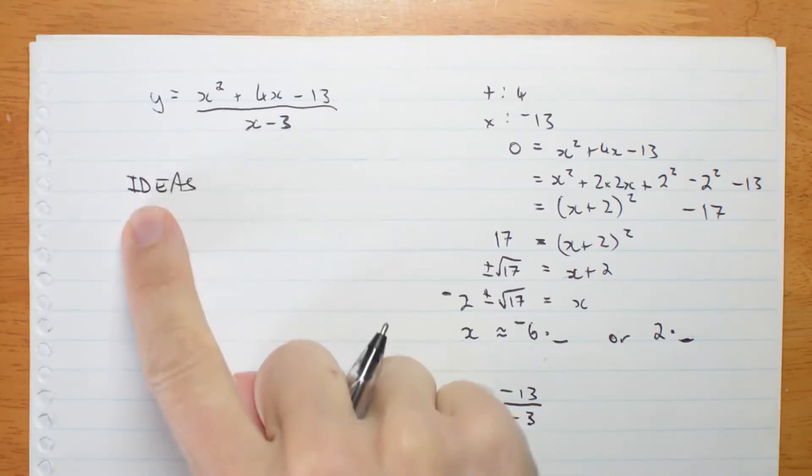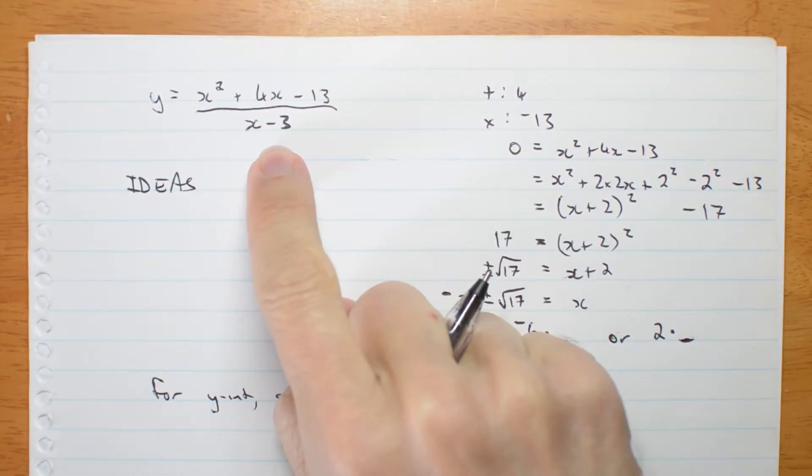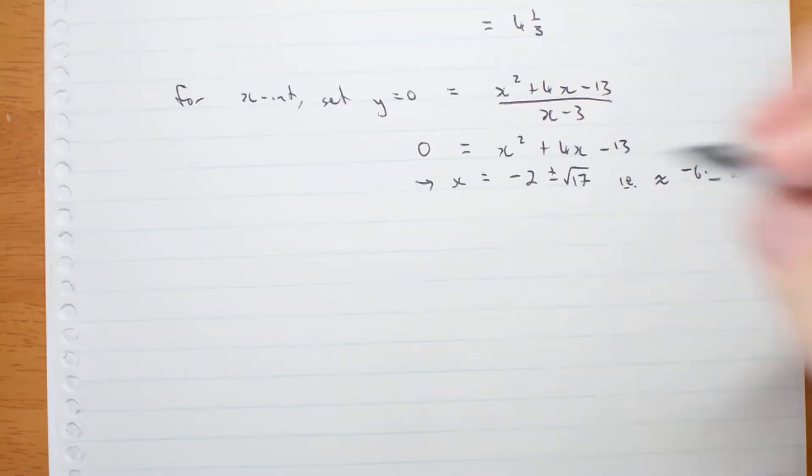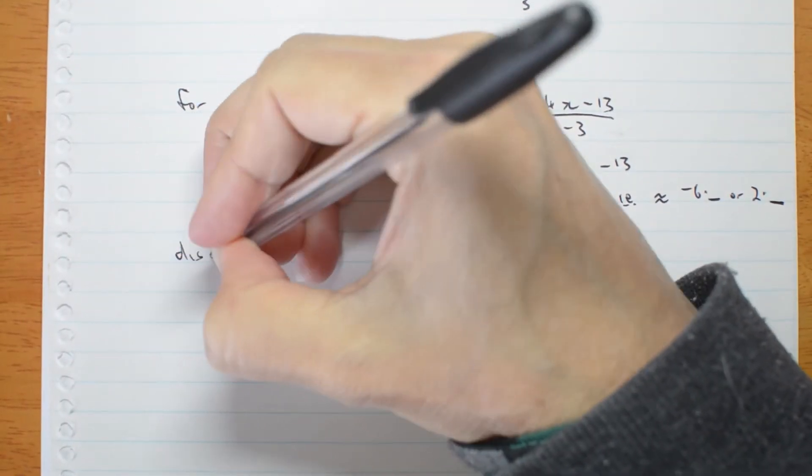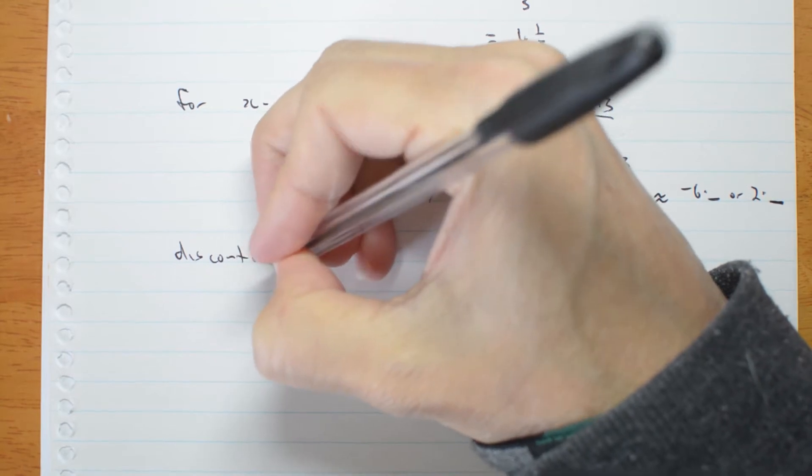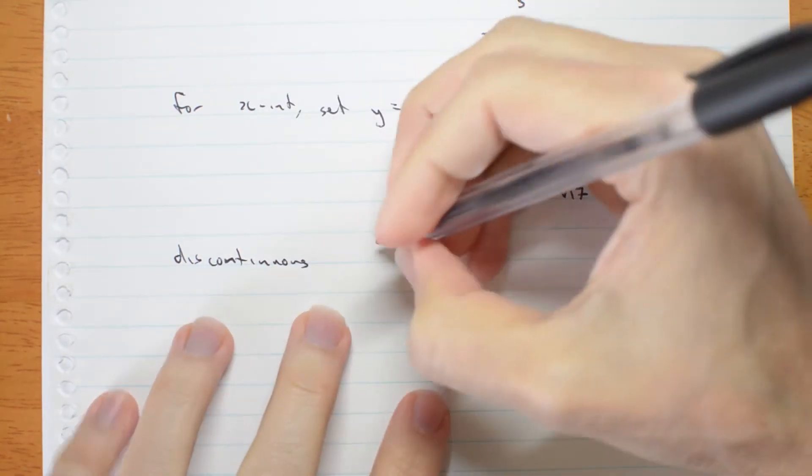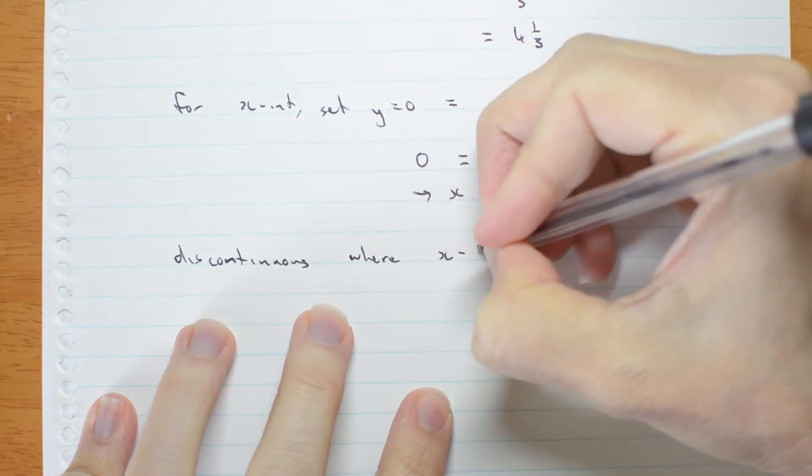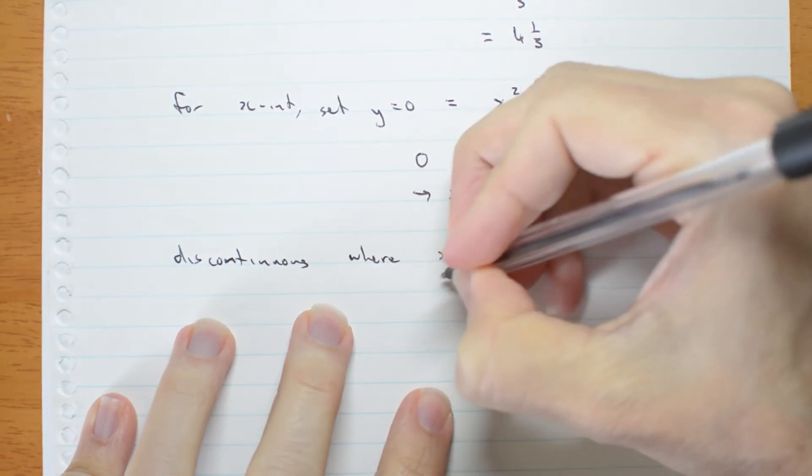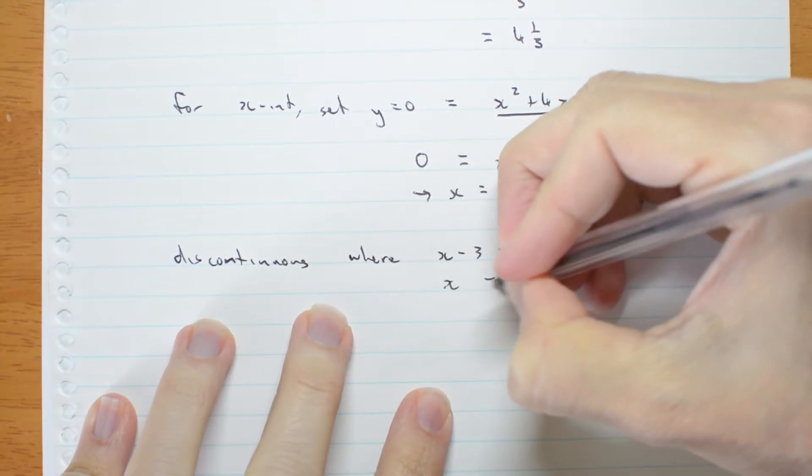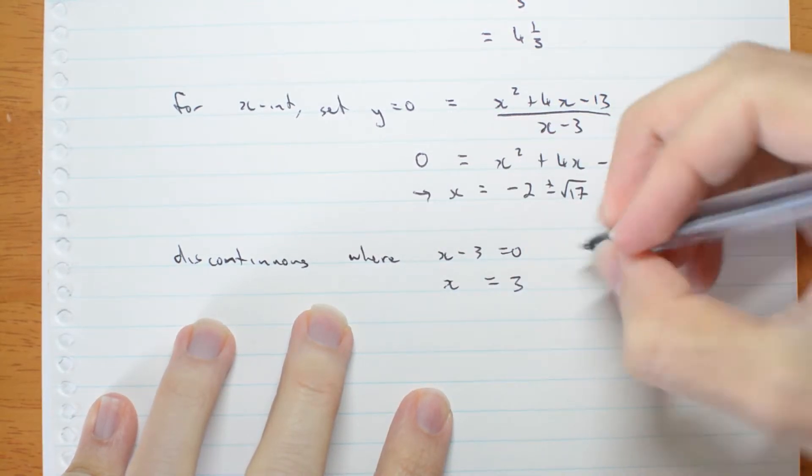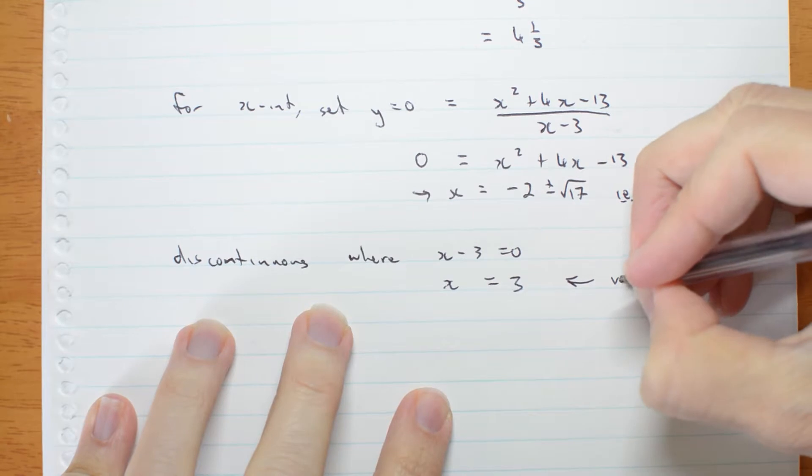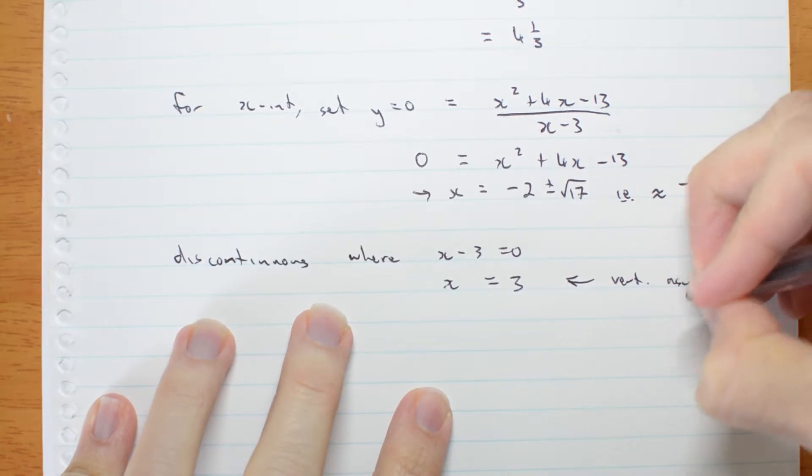Discontinuities. My graph is discontinuous where the bottom is 0. Discontinuous where x minus 3 is 0, i.e. x equals 3. So that's going to be a vertical asymptote.